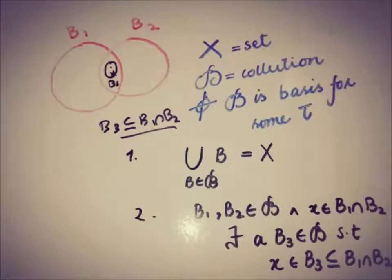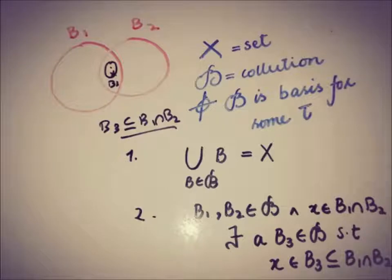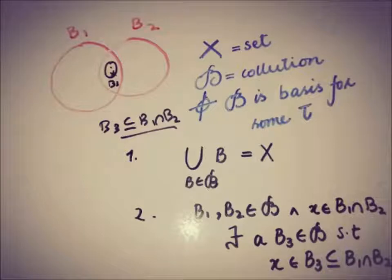Hello everyone, this is DA from A-Academy. Today we will talk about the proof of the claim that was discussed in the previous video — the definition of the basis — when we are uncertain about the topology on a set X but we have a collection of subsets of X.